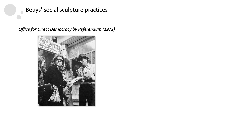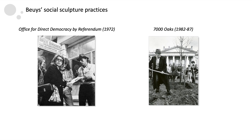The former is exemplified by his conceptual work Office for Direct Democracy by Referendum, presented at Documenta 5, as shown on the left side. In this work, Beuys transformed the gallery into a space for discussion with visitors about social problems in West Germany. The latter can be seen in his work Seven Thousand Oaks, installed for Documenta 7 on the right side, in which Beuys, with the help of local citizens, planted seven thousand oak trees around the city of Casal.